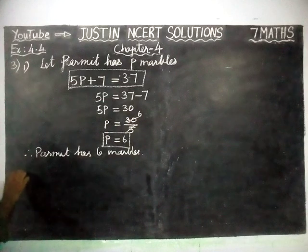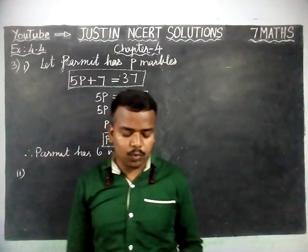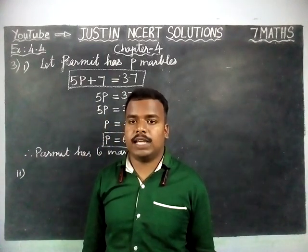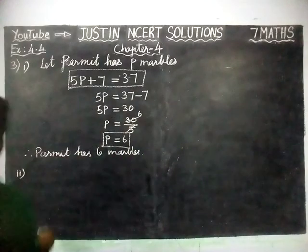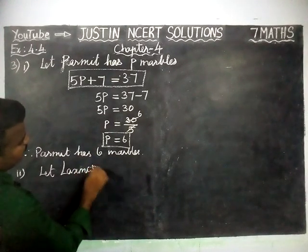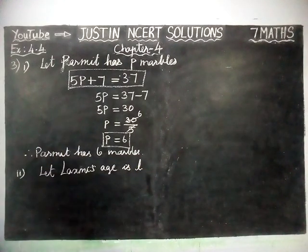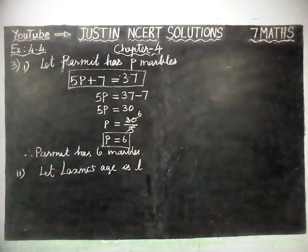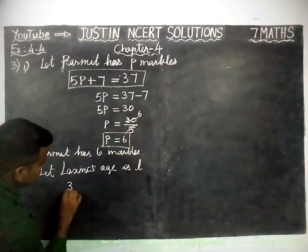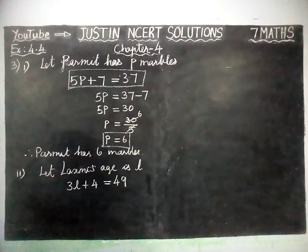Second question: Lakshmi's father is 49 years old. He is 4 years older than 3 times Lakshmi's age. We are going to take Lakshmi's age as L. The condition is: 3 times Lakshmi's age plus 4, so 3L + 4 = 49.